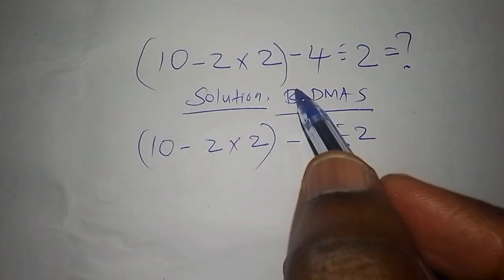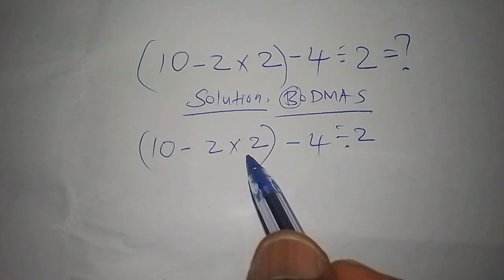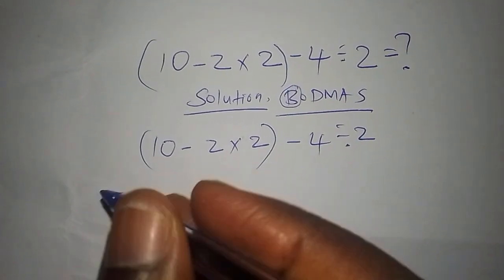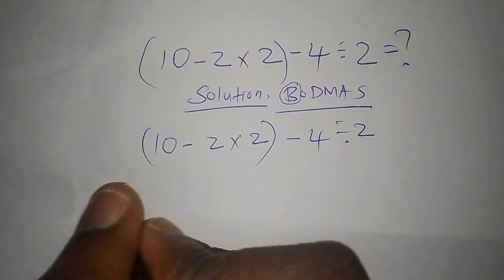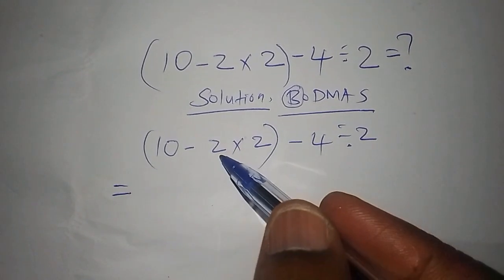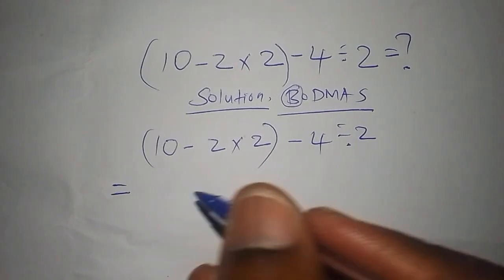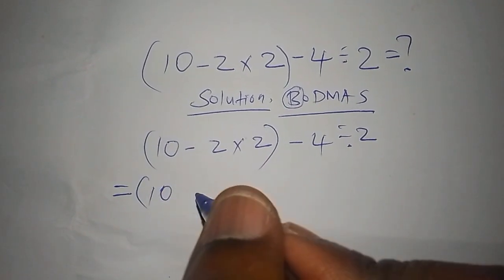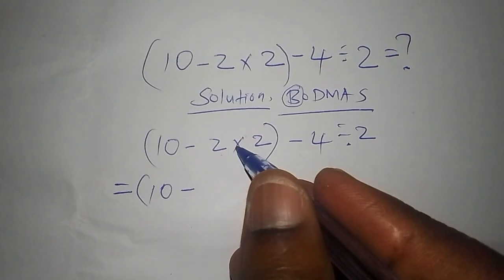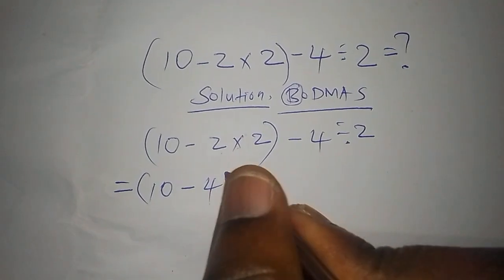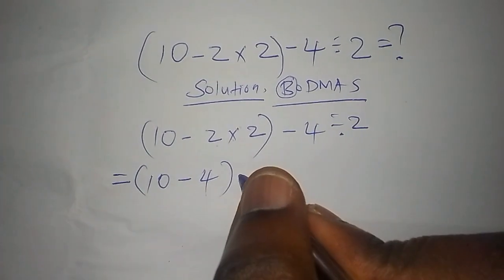We shall say this equals—now we start with the multiplication. We have 2 multiply by 2. So we shall say this is 10 in brackets: 10 subtract 2 multiply by 2, and the answer is 4. You simply close the bracket again, subtract 4, then divide by 2.